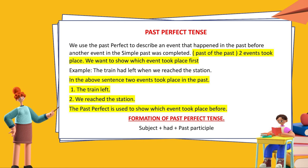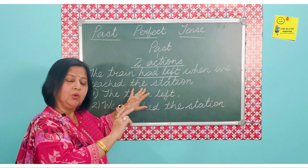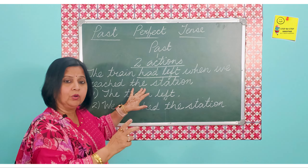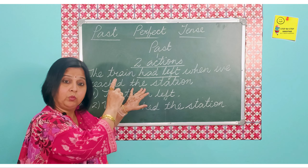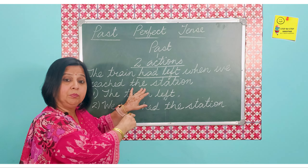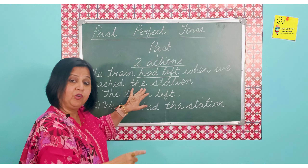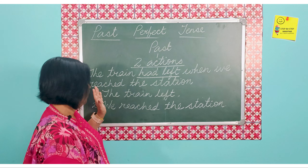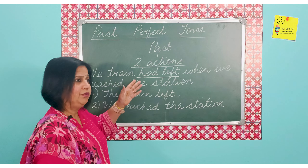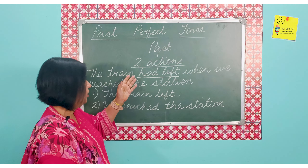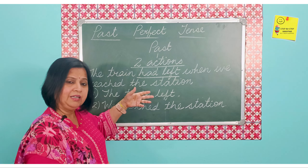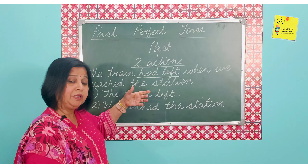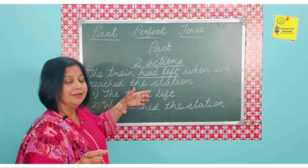We use the past perfect to show the order: this took place first and this took place after. When we write the sentence 'the train had left when we reached the station,' we can change the order. We can also say 'when we reached the station, the train had left.' It will not make any difference to the meaning.